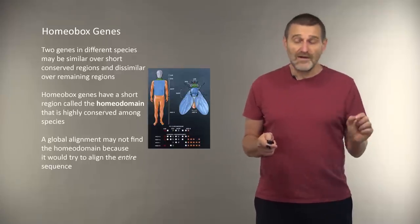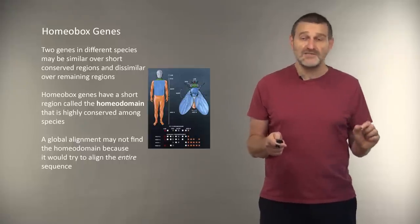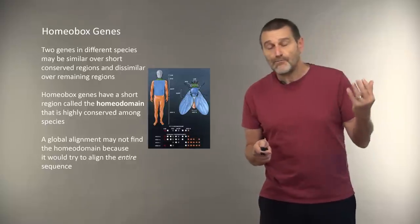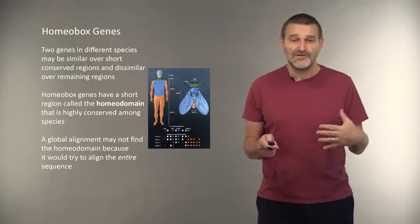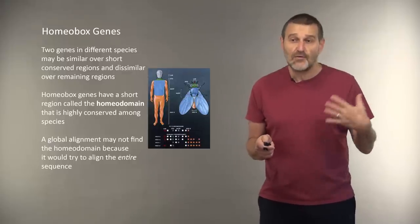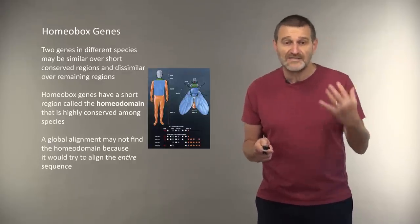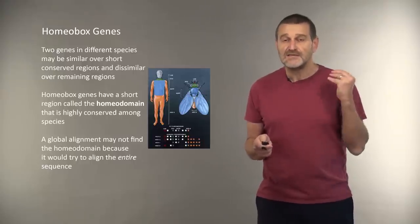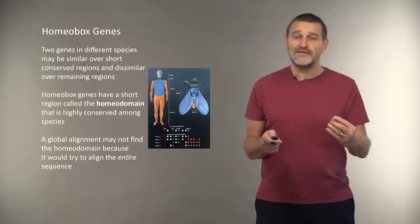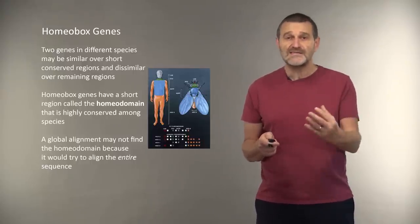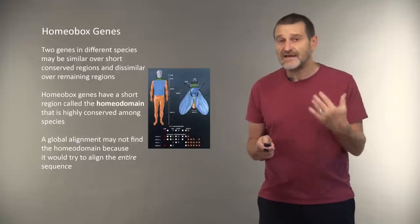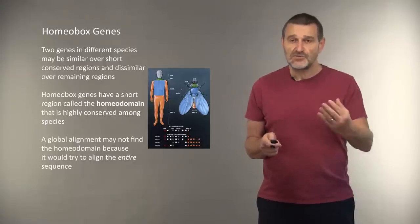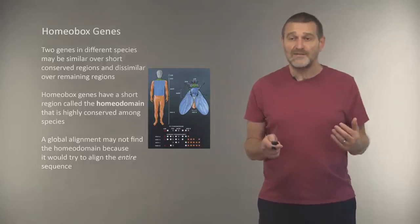But global alignment of homeobox genes would not reveal homeodomain, because it would most likely pass through completely arbitrary region of the sequences, since homeodomains are short sub-segments of homeobox genes. How can we find this important biological similarity that, however, do not extend over the entire length of sequences? And thus, in the case of search for these short sequences, the global alignment fails.